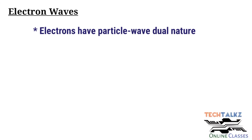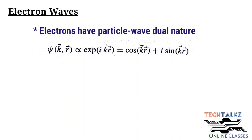In the classical picture, electrons are particles that follow Newton's laws of mechanics, but in reality electrons have dual properties — that is wave and particle characteristics. The wave function for a free electron can be expressed as ψ(k, r) which is equal to cos(k·r) + i·sin(k·r), where r is the position in x, y and z coordinates and k is the wave vector with components kx, ky and kz.